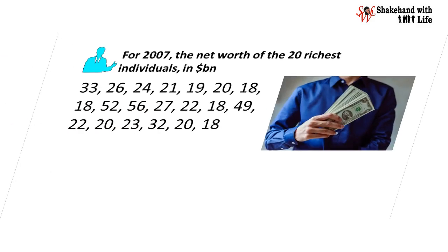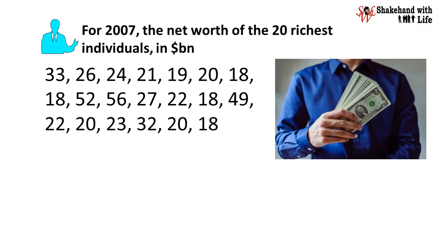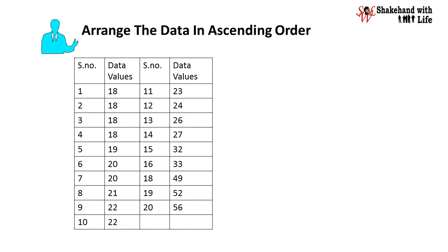Here the data is given for 2007, the net worth of 20 richest individuals in billions of dollars. How to find the median of this data? To calculate the median for the given data, first we need to arrange the data in ascending order.